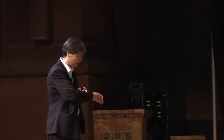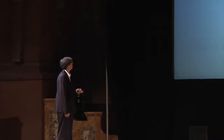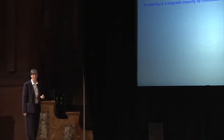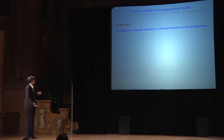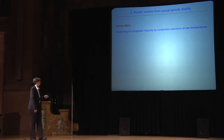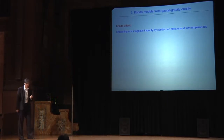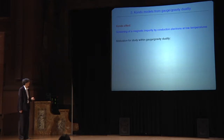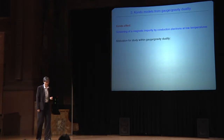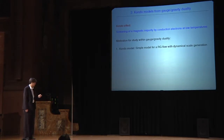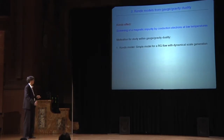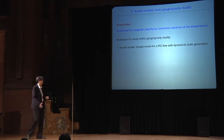Let me start with the Kondo model. The Kondo effect in condensed matter physics means there is a screening of a magnetic impurity by conduction electrons at low temperatures. Why would we like to consider this system within gauge-gravity duality? First, the original Kondo model is a very simple model for a renormalization flow which also involves dynamical scale generation, so there is intrinsic interest in studying this.